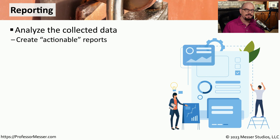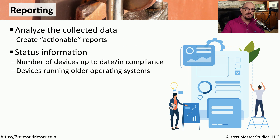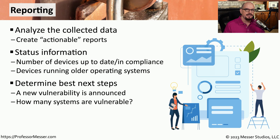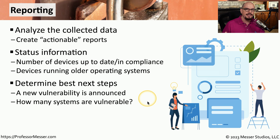These reports can contain extensive information about the status of systems on our network, and we're often looking for actionable reports — reports that give us a clue of what to do next. For example, you might create a report showing how many devices are up to date or in compliance with vulnerability patches. More importantly, you can identify what devices are not in compliance and determine what actions are required to bring them up to date. You can also run reports on operating systems in use and whether any need to be updated or patched. With all of this information stored in the database, you can instantly create reports given the latest vulnerability of the day — for example, if a new vulnerability is suddenly announced, you can use the database to understand how many systems may be vulnerable to that specific vulnerability.